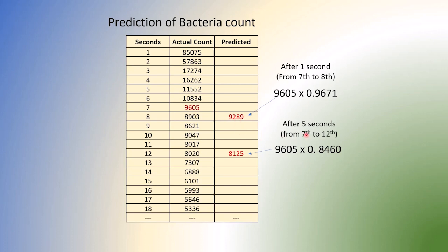How about after 5 seconds? Well, at 7th level, we have this much. Multiply by 0.8460 and we get to that number. And here we are actual minus this one predicted. Pretty close. So it does work. So this was transforming the dependent variable.